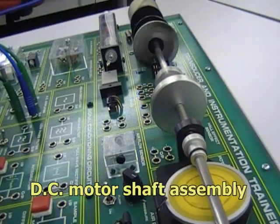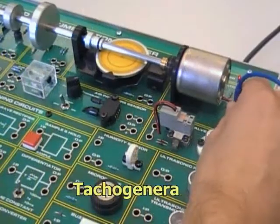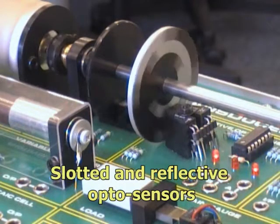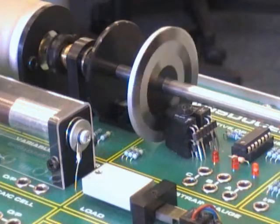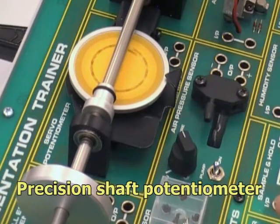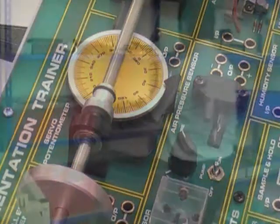The trainer also features a shaft assembly that carries a DC motor, TACO generator, slotted and reflective optosensors for incremental and absolute position, and a 360 degree precision potentiometer with indicator dial for closed loop position control experiments.